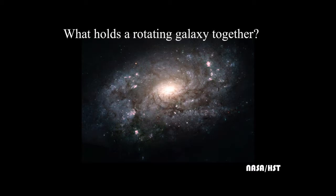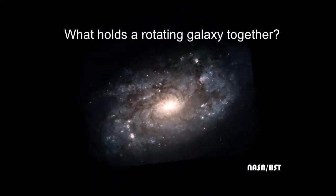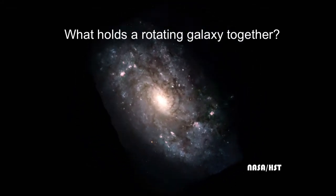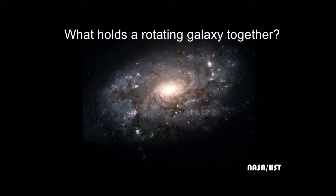We know, and this was one of the great discoveries of Sir Isaac Newton, that the same ropes that hold us to the Earth are the ropes that hold the planets and the moon to the Earth and the planets to the sun. And we would imagine are the ropes that hold the stars and gas and dust together in galaxies as they rotate. But the problem is that galaxies spin too fast to be held together by the gravity caused by what we can see.